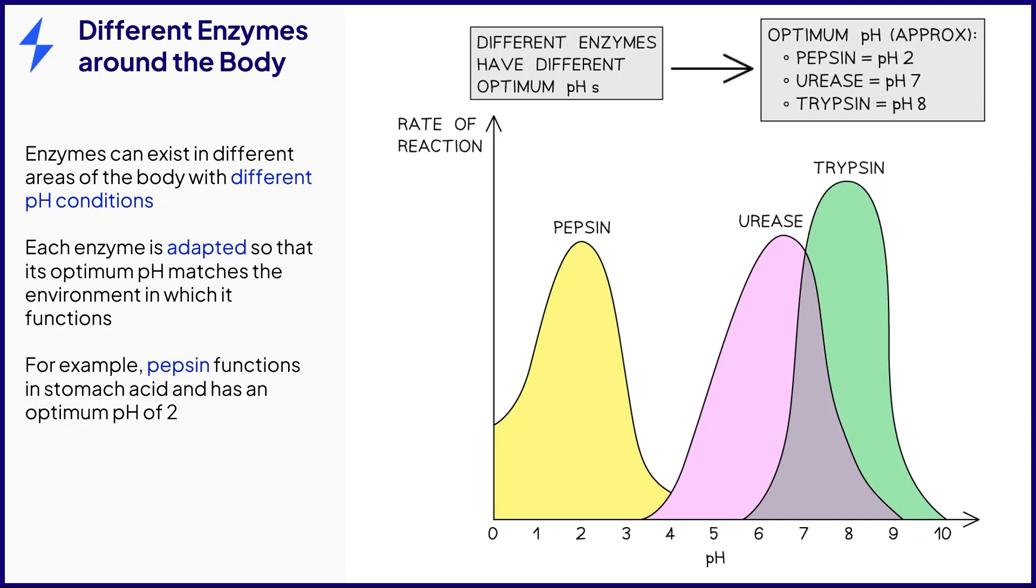You can see that pepsin, which is an enzyme found in stomach acid, has an optimum pH of 2 to prevent it from denaturing in the acidic conditions of the stomach, while the enzyme urease has an optimum pH of around 7 and trypsin has an optimum pH of around 8.